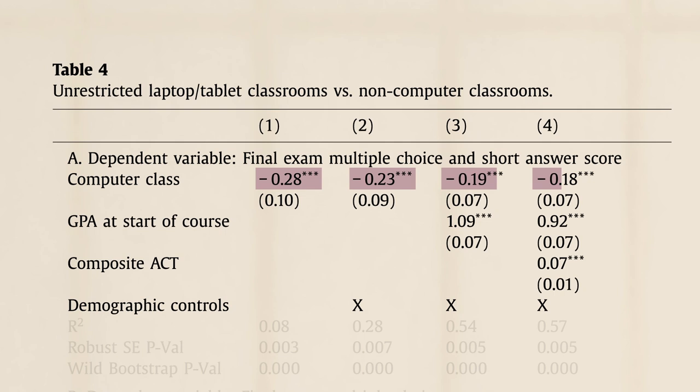Well, the coefficient on using a computer is always a pretty big negative number. That's right! We can also see that the standard errors are small enough to make these negative results statistically significant. In other words, the primary takeaway from this experiment is that electronics in the classroom reduce student learning.